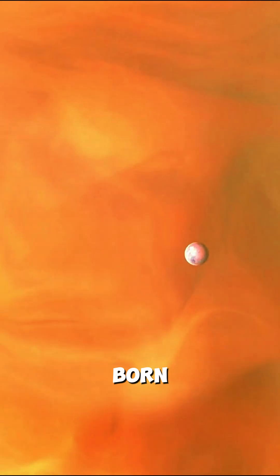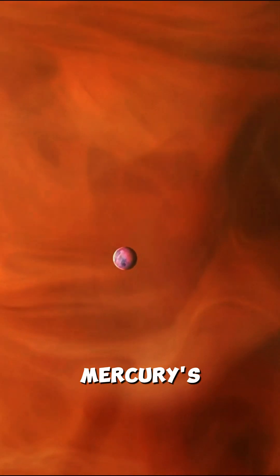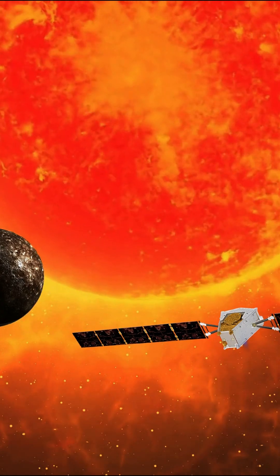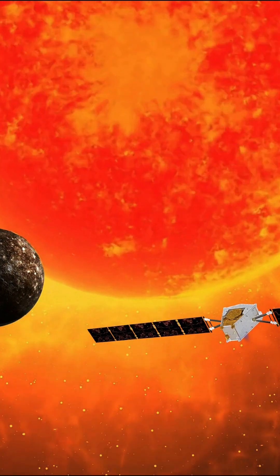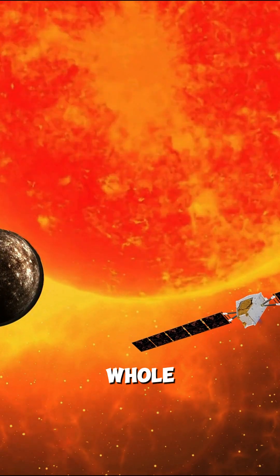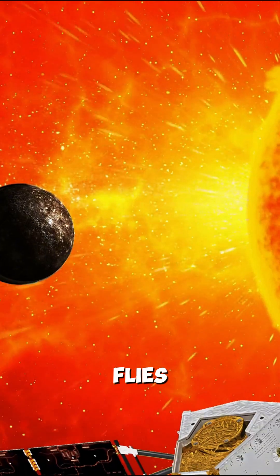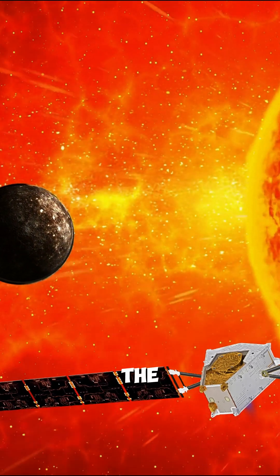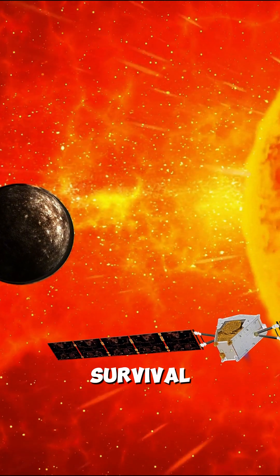The sun doesn't just burn Mercury, it whips it. These storms can swallow Earth whole. Yet BepiColombo flies straight into the chaos, because hidden here is the key to stellar survival.